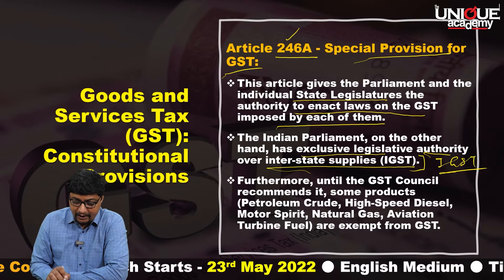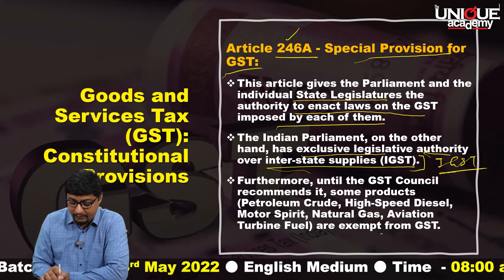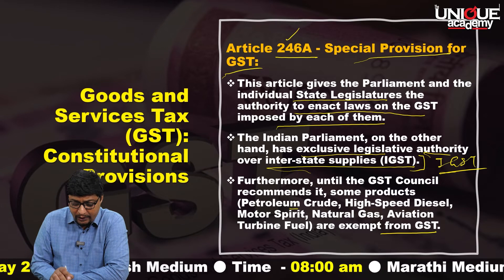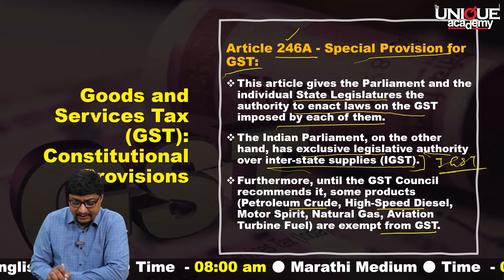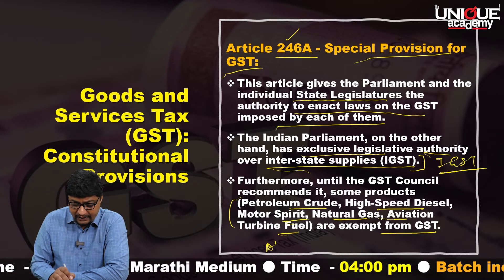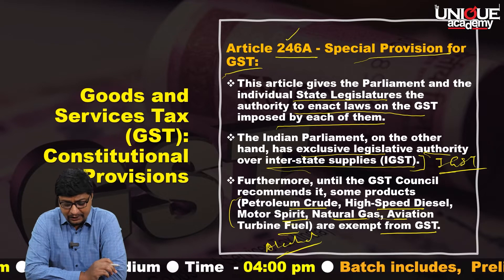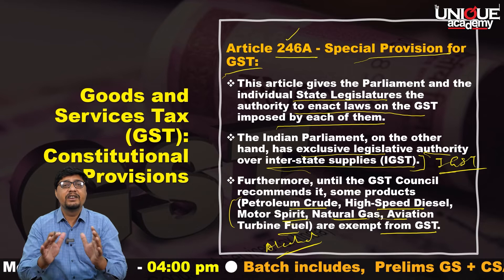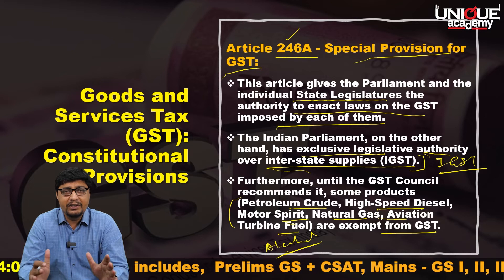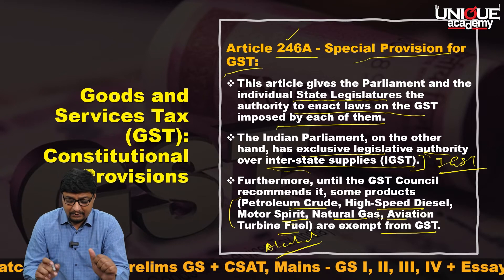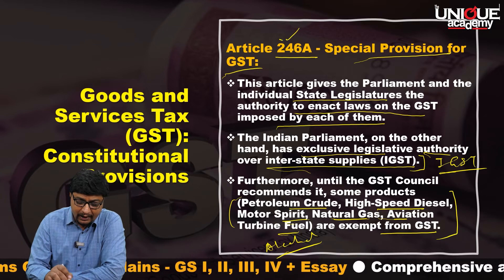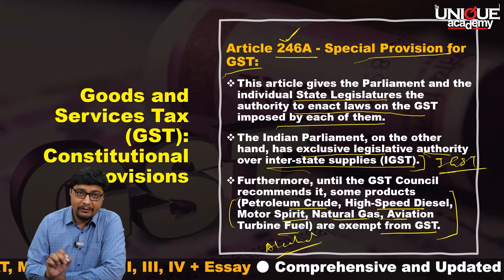Until the GST Council recommends it, some products are exempt from GST. For example, petroleum products — petroleum crude, high-speed diesel, motor spirit, natural gas, aviation turbine fuel — and even alcohol are not under GST. Unless the GST Council recommends and creates a consensus to bring these under GST, they remain exempt. This is also governed by Article 246A.